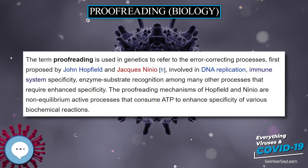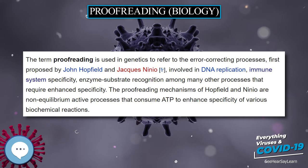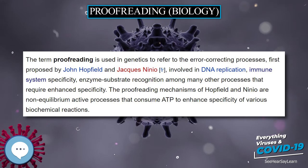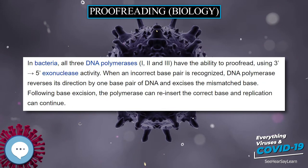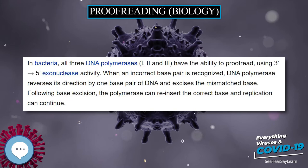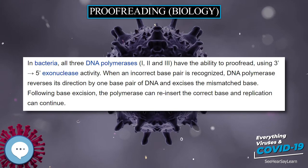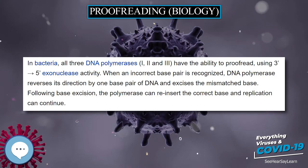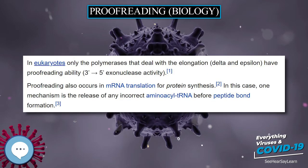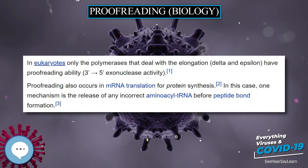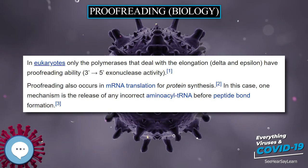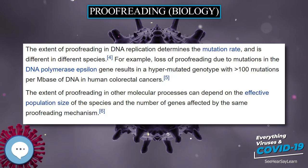Proofreading — Biology. The term proofreading is used in genetics to refer to the error-correcting processes, first proposed by John Hopfield and Jacques Nino, involved in DNA replication, immune system specificity, and enzyme-substrate recognition, among many other processes that require enhanced specificity.